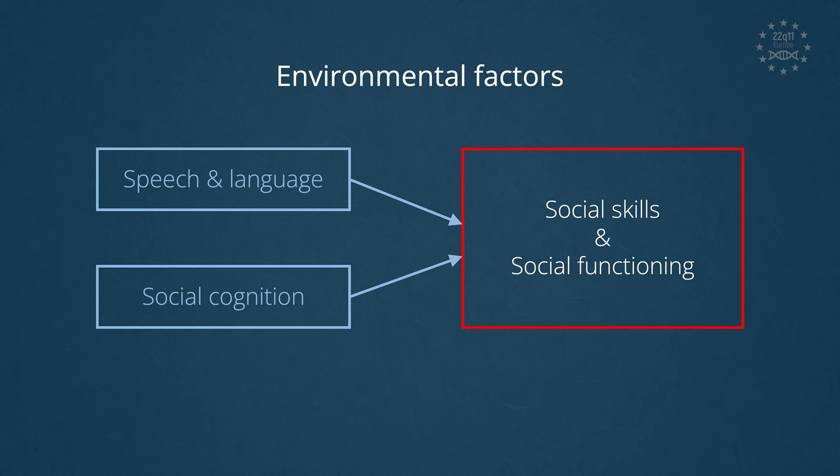Communication and social interactions are at the heart of our daily life, but those are very complex skills that are often disrupted in children and youth with neurodevelopmental conditions, and 22Q makes no exception to that. According to recent models, social functioning and communication are influenced by several building blocks: language, communication, and social cognition, and of course there are also important influences of the environment.